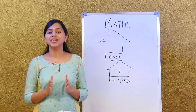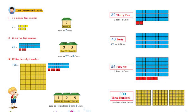Seven is a single digit number, so we read it as seven ones. Twenty-three is a two digit number — we read it as two tens and three ones. One hundred and twenty-five is a three digit number — we read it as one hundred, two tens, and five ones.